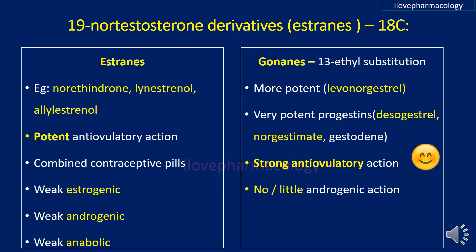The 19-nortestosterone derivatives have two subclasses: estrans and gonans. Examples of estrans include norethindrone, lynestrenol, and allylestrenol. Estrans have potent anti-ovulatory action, and thereby they can be combined with estrogen as combined oral contraceptive pills. Additionally, they have weak estrogenic, weak androgenic, and weak anabolic actions.